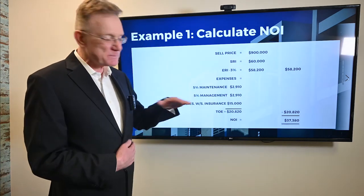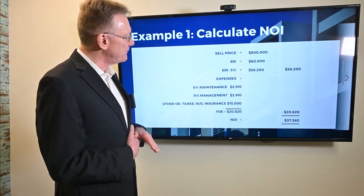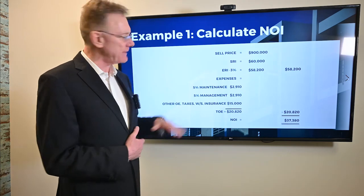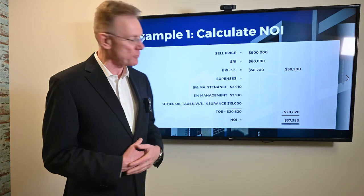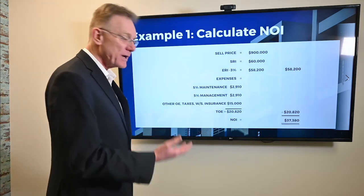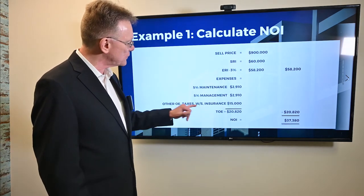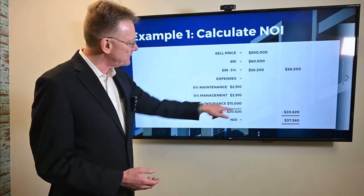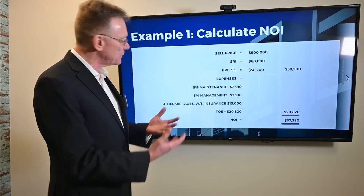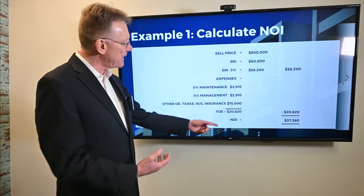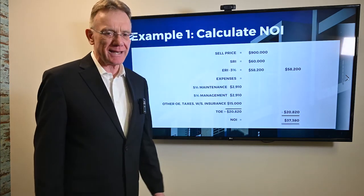In terms of expenses, an appraiser will include 5% for maintenance and 5% for management — both percentages of your ERI. The property will have other expenses as well: in this example, taxes, water, sewer, and insurance totaling $15,000. When we add in maintenance, management, and all other expenses, we get total operating expenses of a little over $20,800.